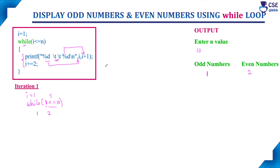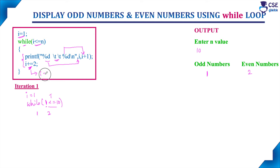The slash t is nothing but a tab space, used to format the output. After printing i value and i plus 1 value, i gets updated. This is initialization, this is the loop expression (condition evaluation), and this is variable updation — a shorthand assignment statement. The equivalent statement is i equals i plus 2. So i value is 1, and 1 plus 2 gives i value as 3.